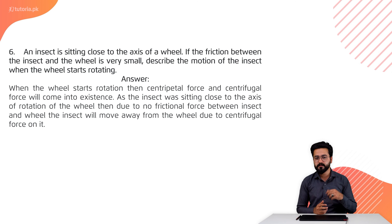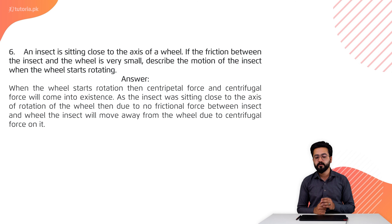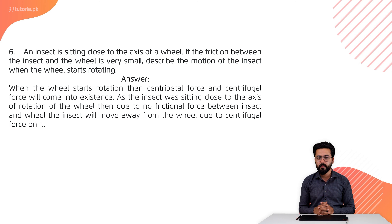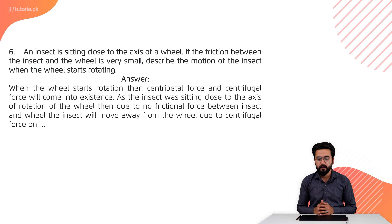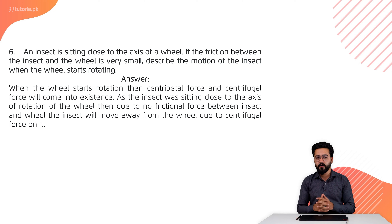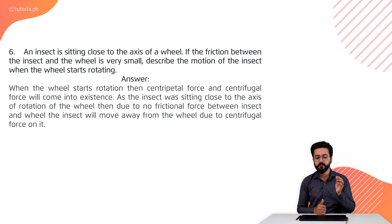When the wheel starts rotation, centripetal or centrifugal force will come into existence. As the insect was sitting close to the axis of the wheel, due to no frictional force between the insect and the wheel, the insect will move away from the wheel due to the centrifugal force acting on it.